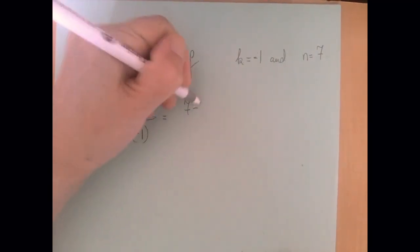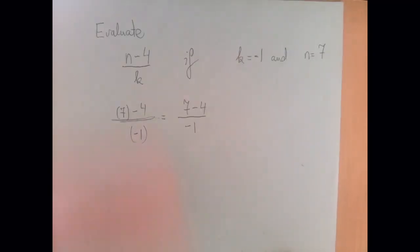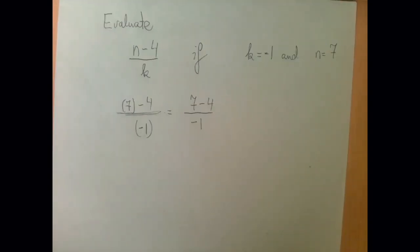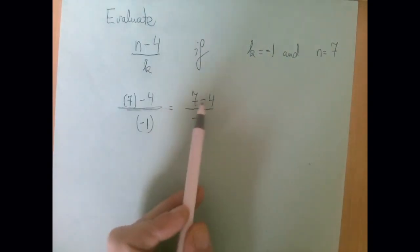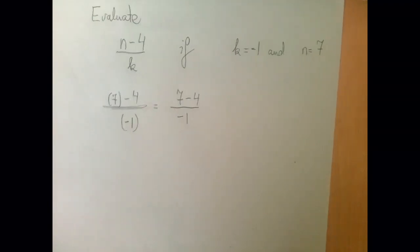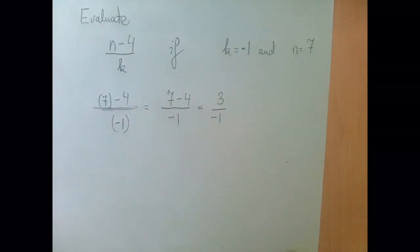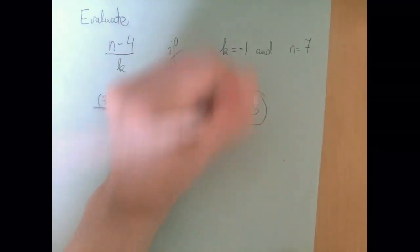We can rewrite this expression as 7 minus 4 divided by negative 1. Now it's an order of operations problem. Upstairs we have a subtraction, 7 minus 4 is 3, and 3 divided by negative 1 is negative 3. That is our answer.